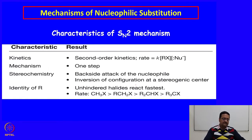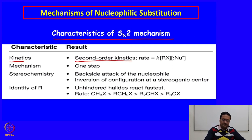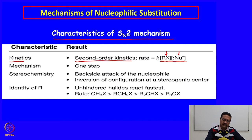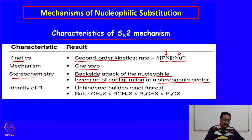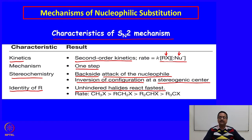To summarize the characteristics of SN2 mechanism: the kinetics show it is a second-order reaction where the rate is determined by the concentration of both the alkyl halide and the nucleophile. The mechanism occurs in one step. The stereochemistry indicates backside attack and inversion of absolute configuration at any stereogenic center. Unhindered halides react faster compared to hindered halides.